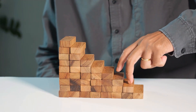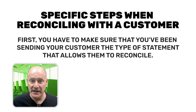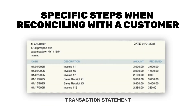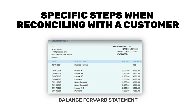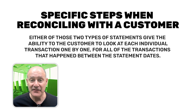So what are the specific steps when reconciling with a customer? Well first you have to make sure that you've been sending your customer the type of statement that allows them to reconcile. We learned in the prior video that you can send them a transaction statement or a balance forward type of statement. Because either of those two types of statements give the customer the ability to look at each individual transaction one by one for all of the transactions that happened between the statement dates. That's what gives both of you the ability to identify any discrepancy between your records and theirs.